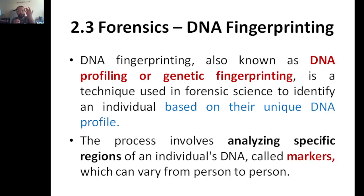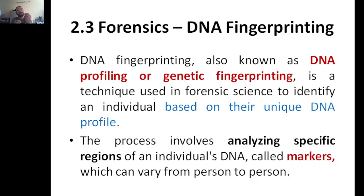Once you collect the sample, you extract DNA from it. Almost all parts of our body contain our DNA. For example, if a single hair falls somewhere, someone can take that hair, extract the DNA, and compare it with a suspect. Once they run PCR amplification and gel electrophoresis, they can compare the DNA bands and determine if the hair belongs to that person. This is why it is called DNA fingerprinting. The specific regions used to identify a person are called markers, and they vary from person to person.